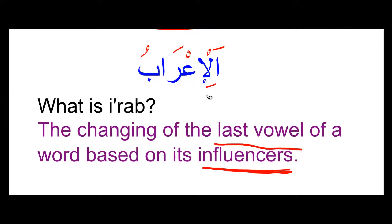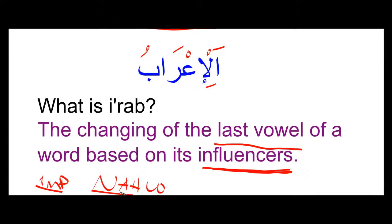I'raab is the most important thing in nahw. You might be wondering why we are learning it now after 9 lessons. The reason is that I wanted to have a lot of examples I could use so that it would be easier to understand, because at i-arabic, we don't just concentrate on grammar, but we try and make sure that everything is understood and applied.